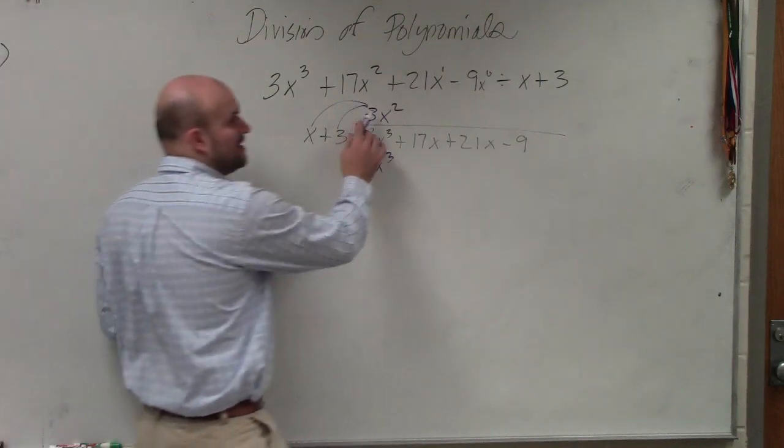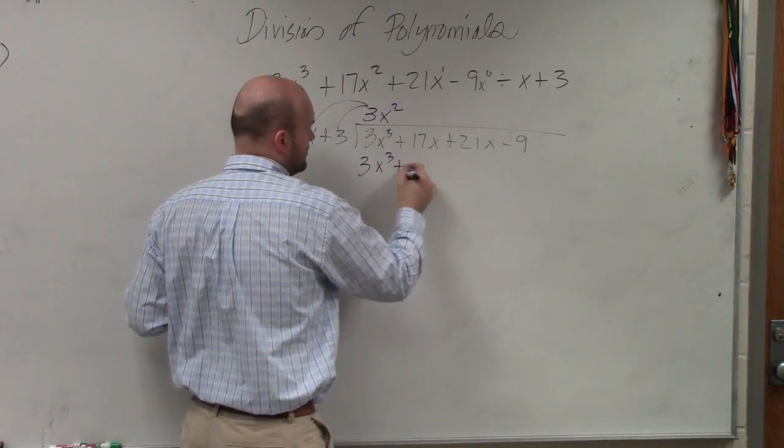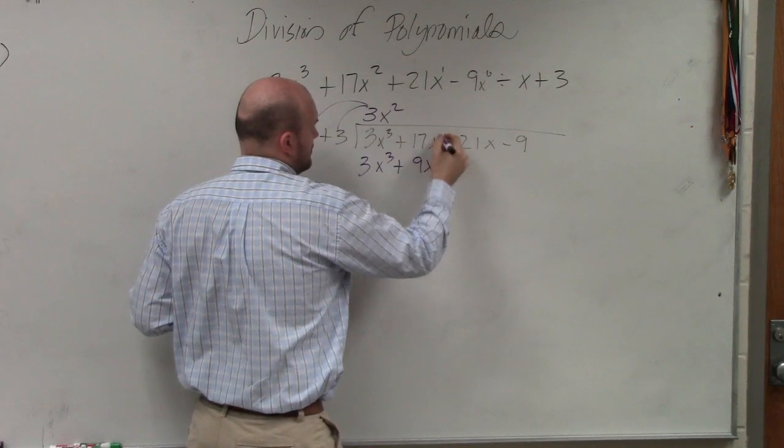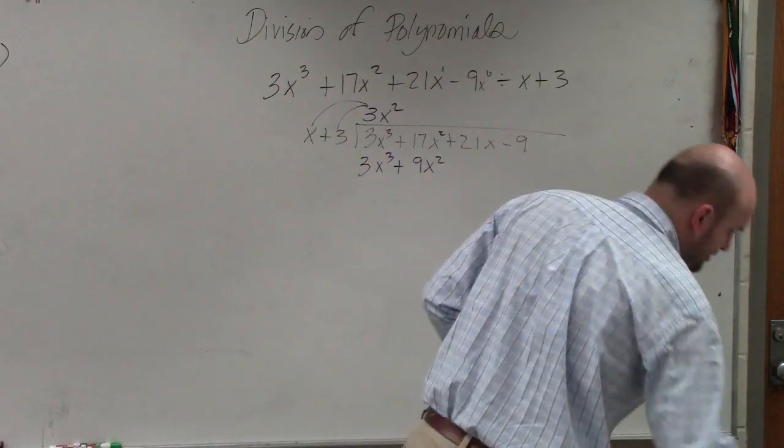So now, then I multiply the 3x squared times 3, which is 9x squared. Right? Now I simply go ahead and subtract the rows.